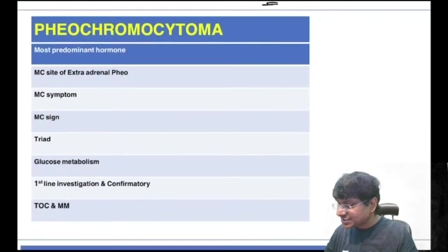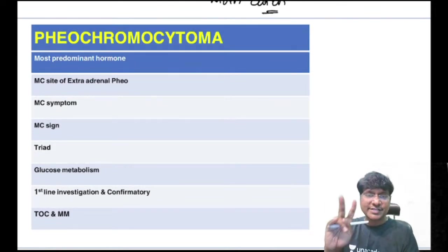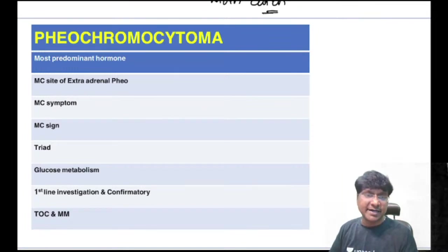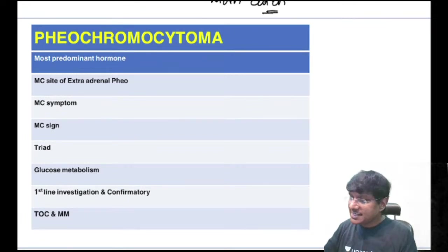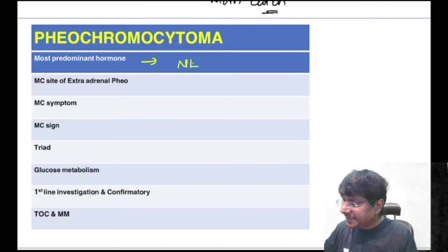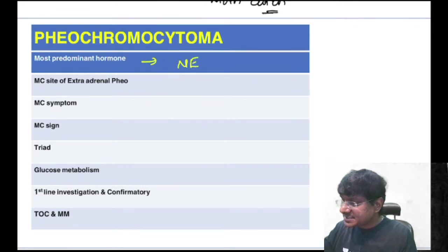Pheochromocytoma is a tumor originating from adrenal medulla; the cells are neuroendocrine/chromaffin cells. Most predominant hormone is norepinephrine. Extra-adrenal pheochromocytoma also exists.